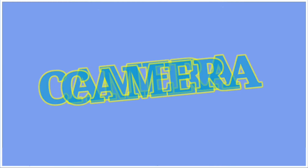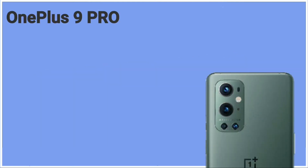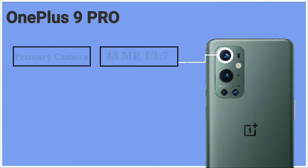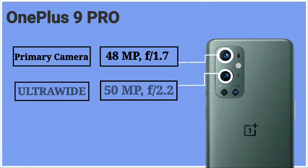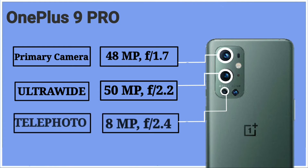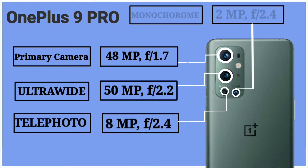Let's talk in detail about the camera, starting with OnePlus 9 Pro. It has a quad camera setup. Its primary camera is 48 megapixel with aperture f/1.7, ultrawide 50 megapixel aperture f/2.2, telephoto 8 megapixel aperture f/2.4, and a monochrome 2 megapixel aperture f/2.4.